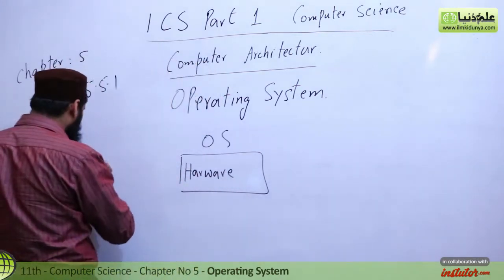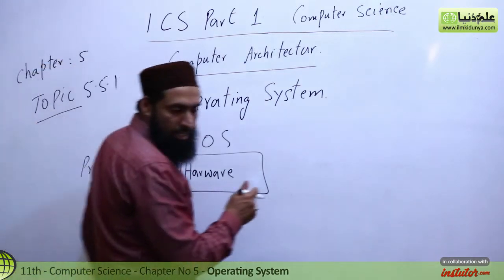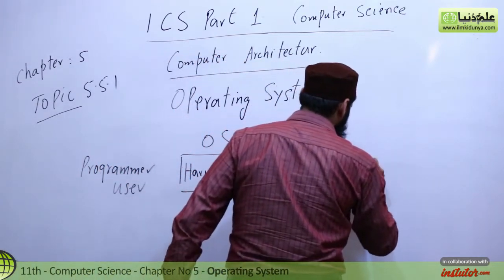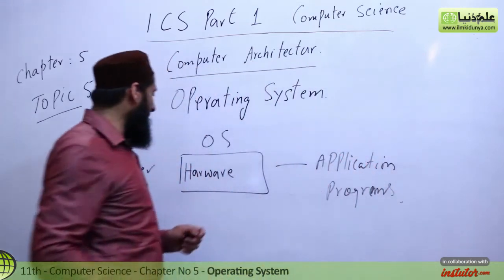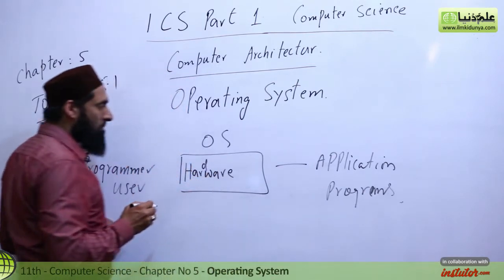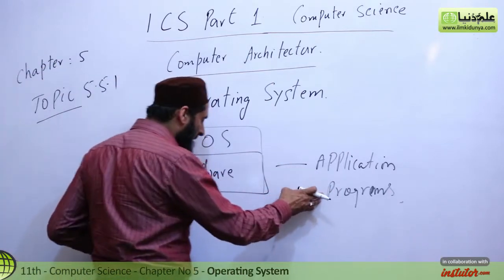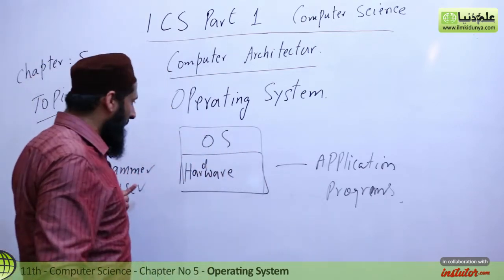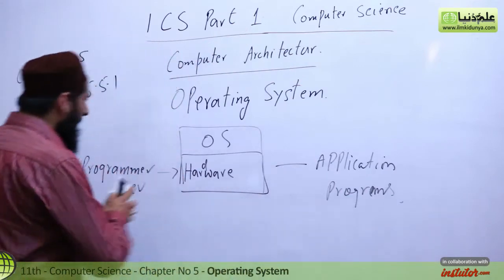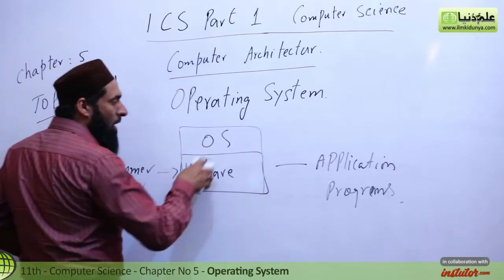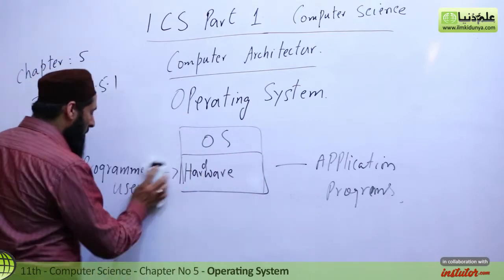The programmer and user are here. These are the programmers and users, and this is where we have software applications — application programs or software which you can write. Here we have hardware. The operating system sits between hardware and the users, and hardware operating system will help out. Now we will talk about the functions of the operating system.